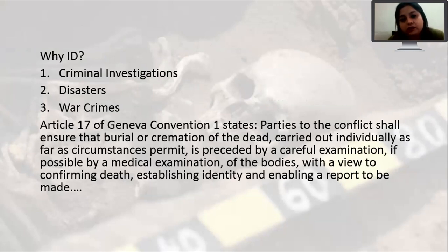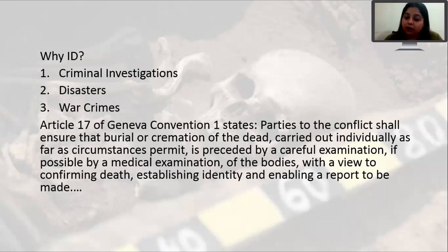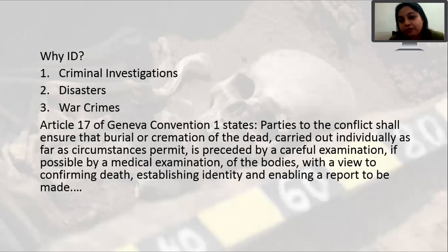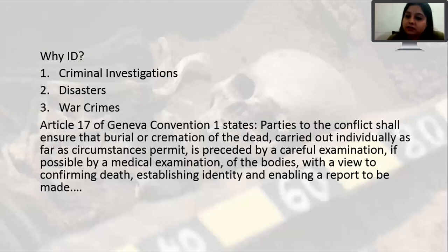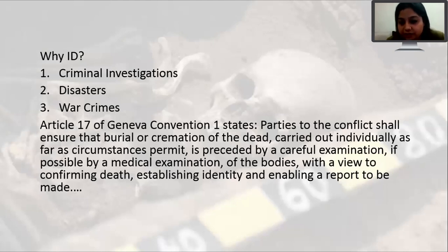The necessity for identification can be classified broadly into three categories. One is for criminal investigations. As long as we don't know the identity of a dead body, it is almost impossible to further investigate the case — we don't know who the person was, which family and friends to interview, or the manner of death. Cases where identity remains unknown often end up being cold cases and closed files.